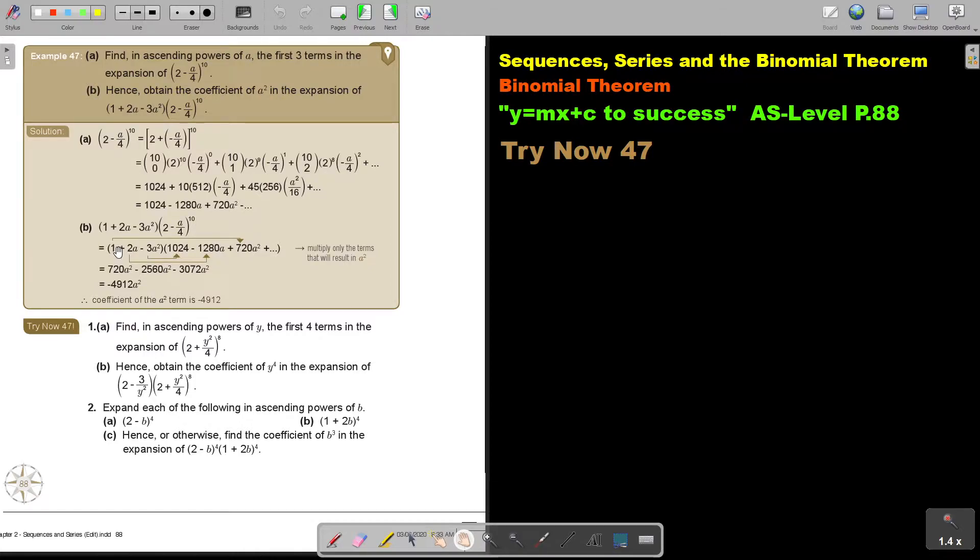And then you think, what will you multiply to get a squared. So 1, I will multiply with a squared. If it's a, I will multiply with another a. And if it's a squared, I will multiply with the constant. And you just multiply that once. Then you just simplify by adding up your coefficients. And the coefficient of a squared is this. Not so difficult.